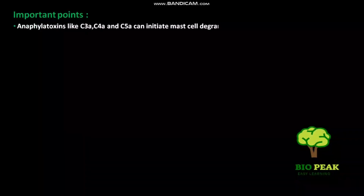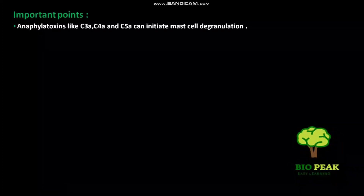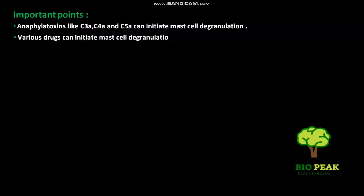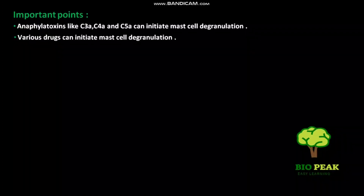Some important points: anaphylotoxins like C3a, C4a, and C5a can initiate mast cell degranulation. Various drugs can also initiate mast cell degranulation.